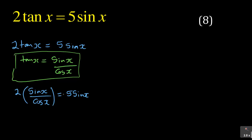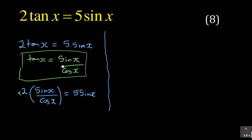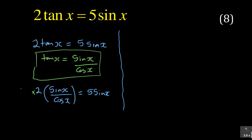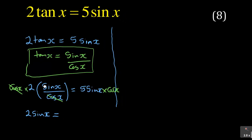It is your trig algebra — you just have to know your algebra as well as your trigonometry. Now, the aim is to find the general solution. We can multiply both sides by cos(x) to remove the fraction, so we have 2sin(x) is equal to 5sin(x)cos(x).